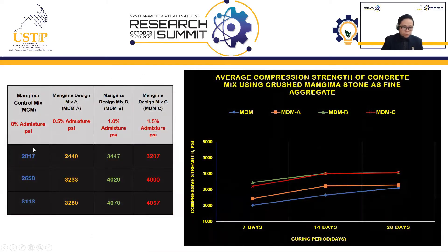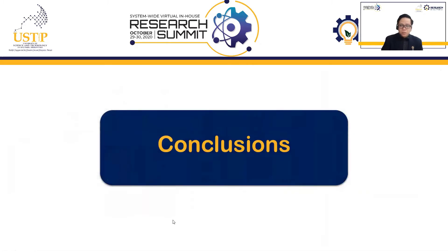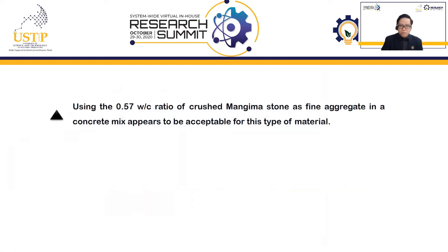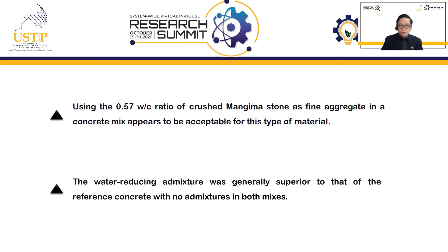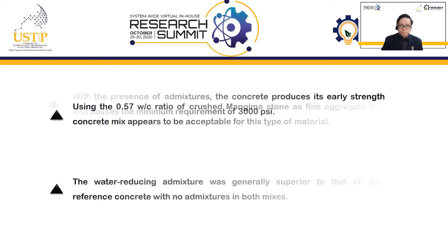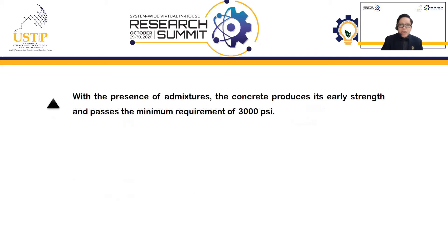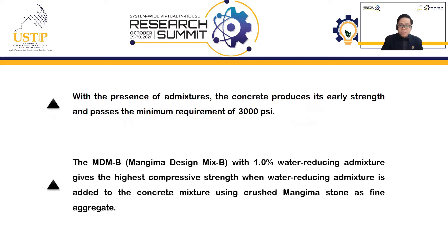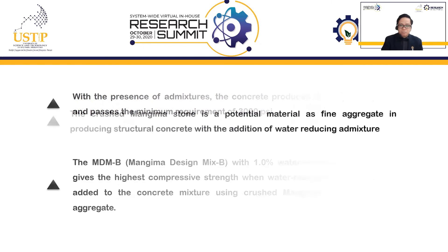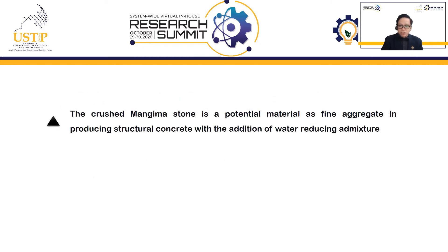For zero admixture compared to added admixture, it has a higher value compared to zero percent admixture. Therefore, the additional admixture will help the concrete mix improve its strength. Conclusions: using the 0.57 water-cement ratio with crushed Mangima Stone as fine aggregate in a concrete mix appears to be acceptable for this type of material. The water-reducing admixture was generally superior to the reference concrete with no admixture in both mixes. With the presence of admixtures, the concrete produces its early strength and passes the minimum requirement of 3000 psi. The MDMB, or Mangima Design Mix B, with 1.0 percent water-reducing admixture gives the highest compressive strength. The crushed Mangima Stone is a potential material as fine aggregate in producing structural concrete with the addition of water-reducing admixture.